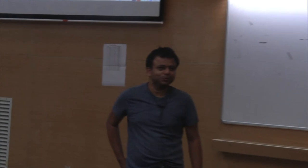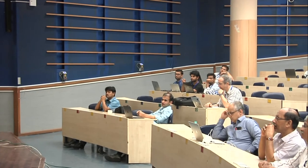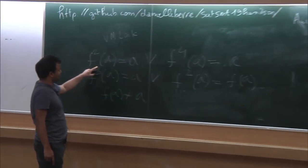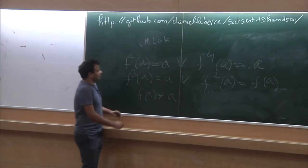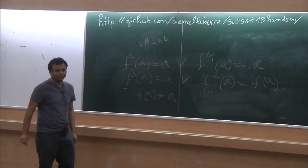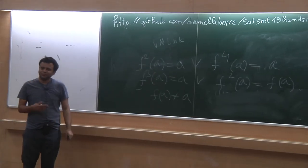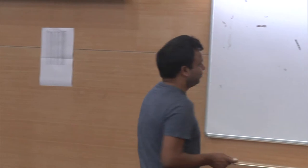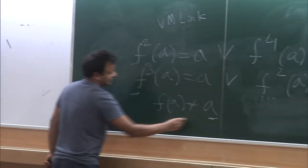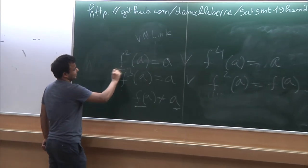How would the solver do it? The solver makes a guess — suppose it decides which disjunct of each clause is true. There is a method called union-find to solve these equality constraints. If you have five terms — a, f of a, f squared of a, f cubed of a, f to the power 4 of a — the solver maintains an equivalence class for each. Initially it creates five different equivalence classes.